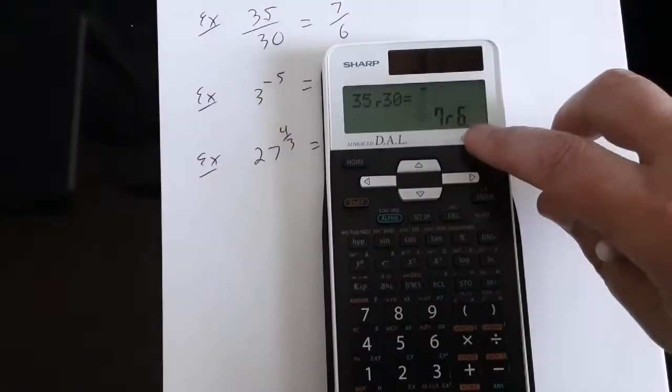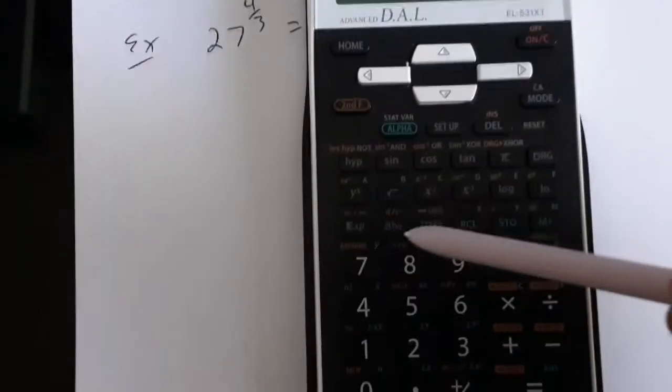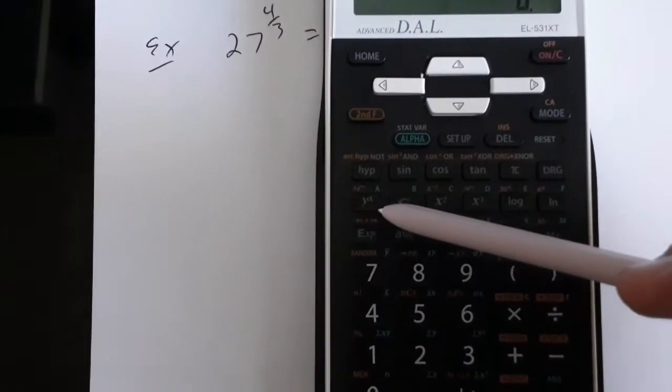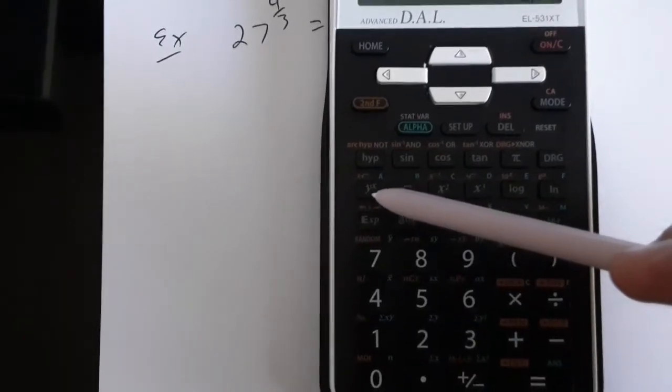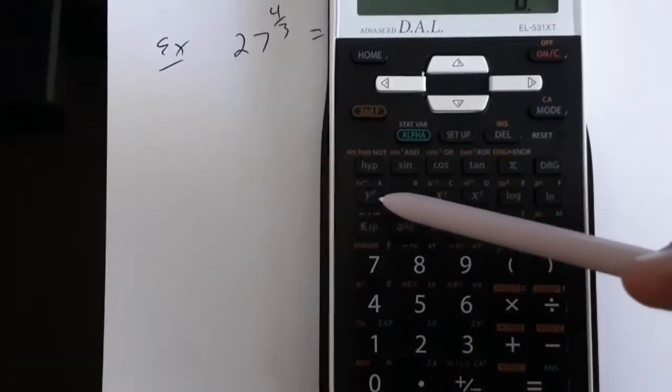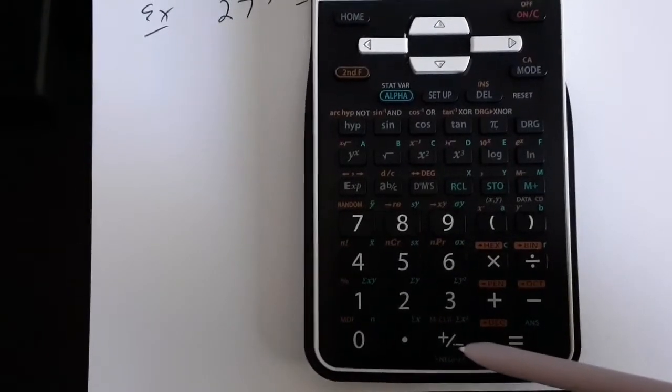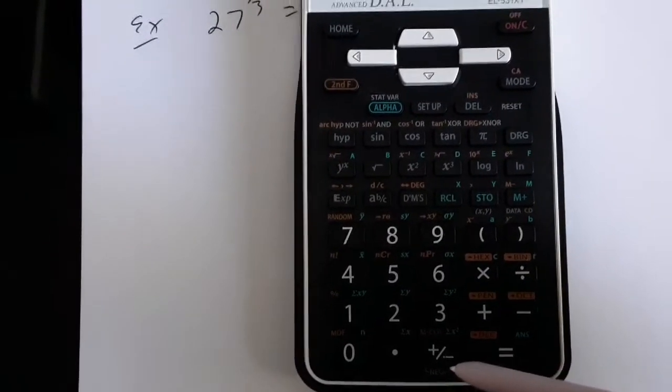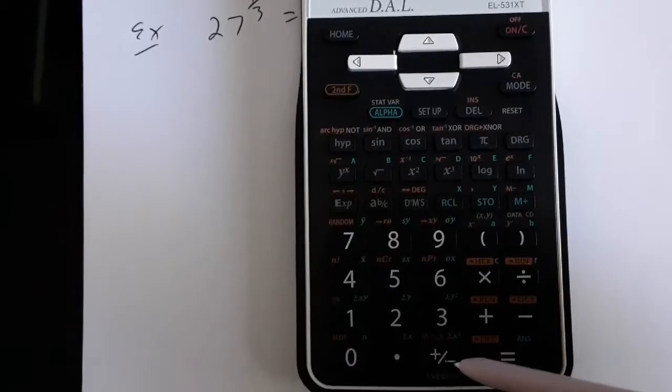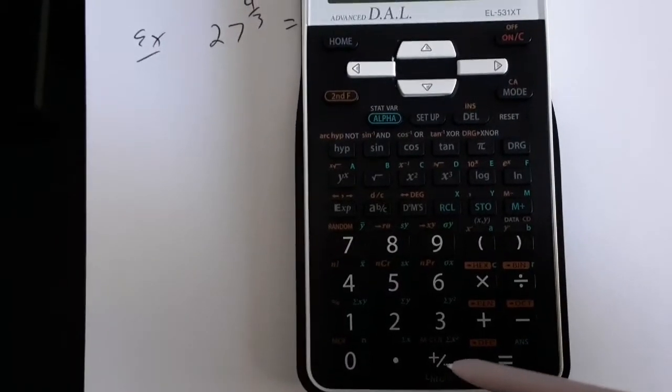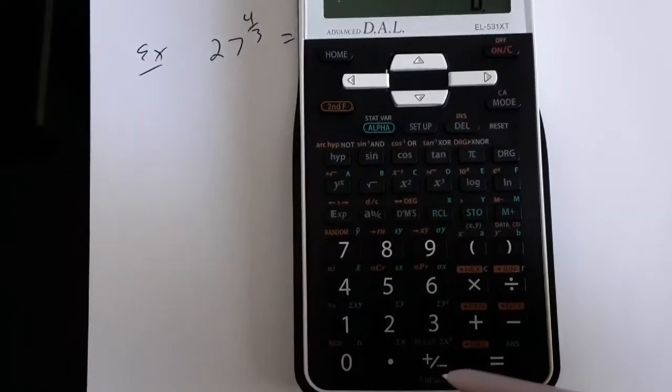The next function that I'd like to introduce, the exponent function, lives over here, and it's the function that looks like y to the power of x. The other thing that I'll need to point out is, since it's going to be a question of finding a negative exponent, this button that I have here, the little plus-minus button, that's the button that I use to turn something from a positive to a negative.